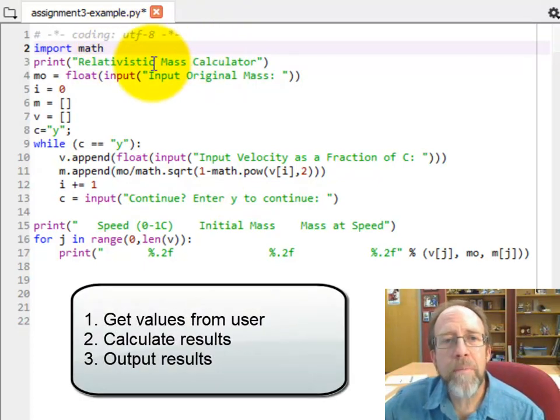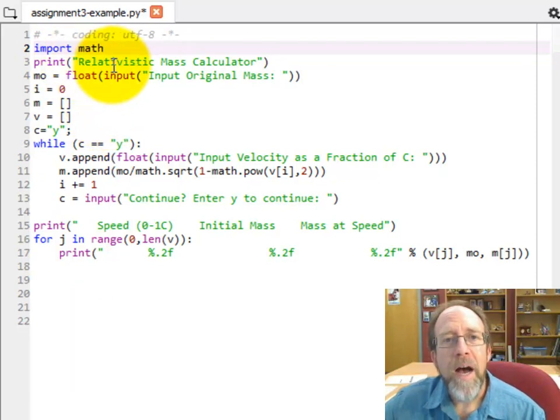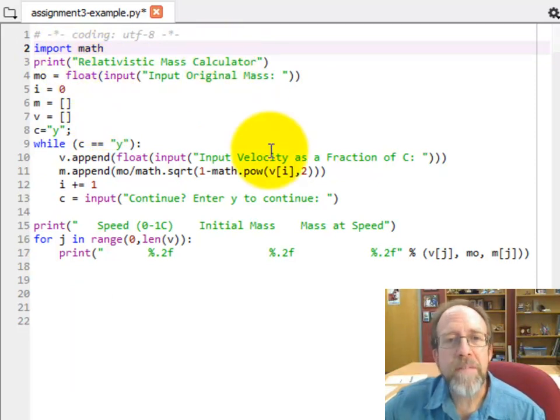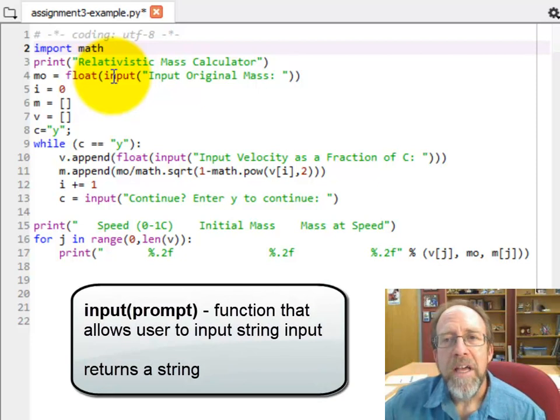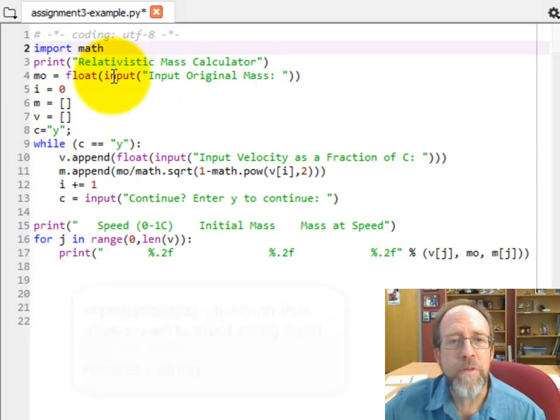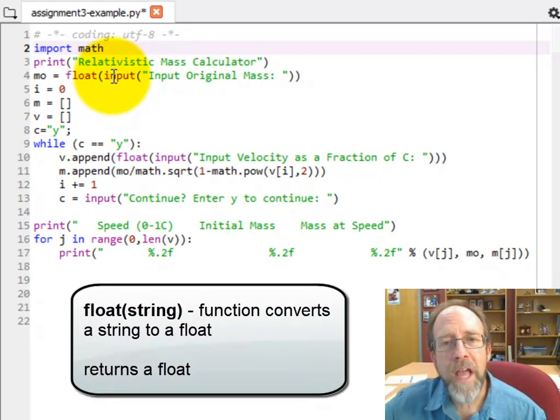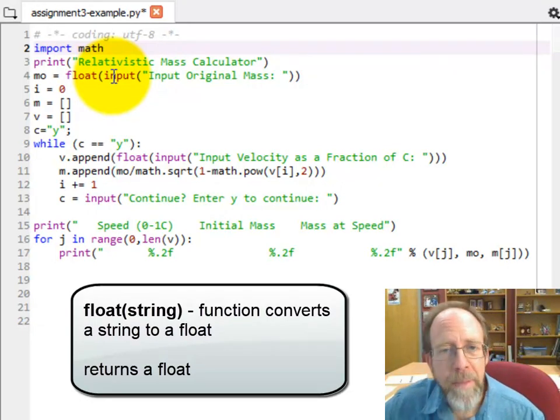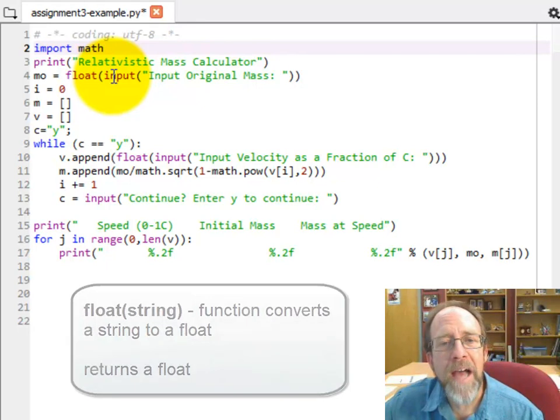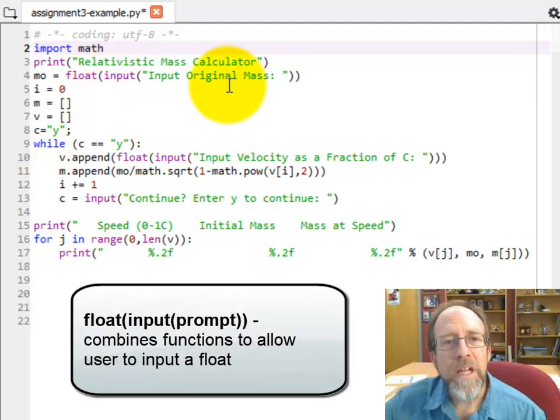So the first thing that I've done here in my program, which is my program right here inside of Spyder, I'm going to print out relativistic mass calculator so that you can see that it's what it is. In our calculator, the first thing that we're going to do is input an original mass. Now, under the theory of relativity, as you travel closer and closer to the speed of light, your mass increases to infinity. So what we're going to do is have different speeds, and we're going to calculate the mass that you're going to be at those individual speeds.